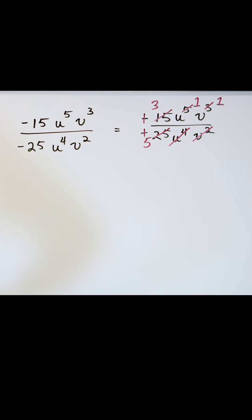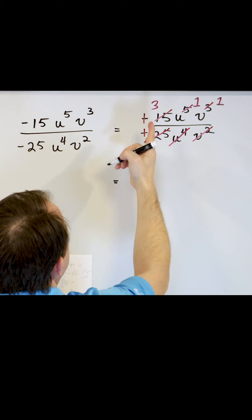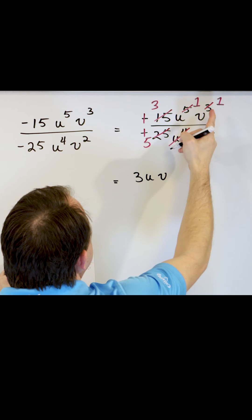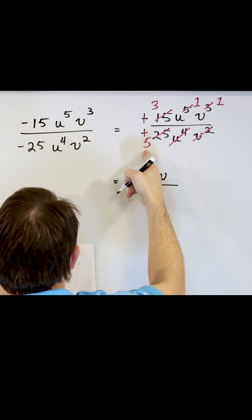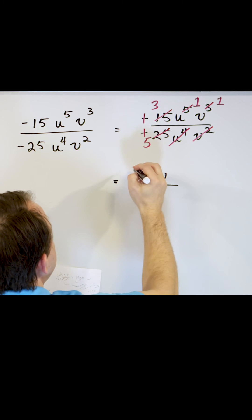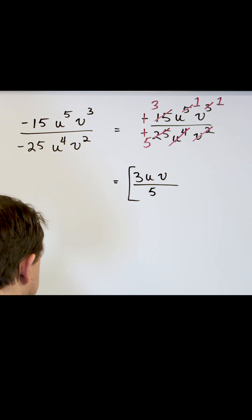So then what we're going to have for our final answer is going to be positive 3U to the first power, V to the first power. On the bottom we will have a 5, so there's nothing else left except for the 5 on the bottom. So we have that as our final answer.